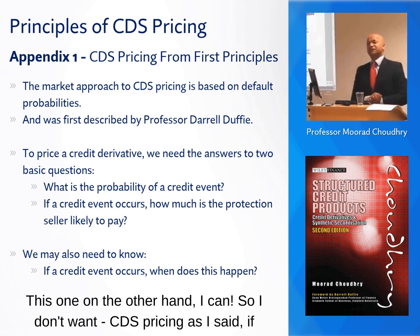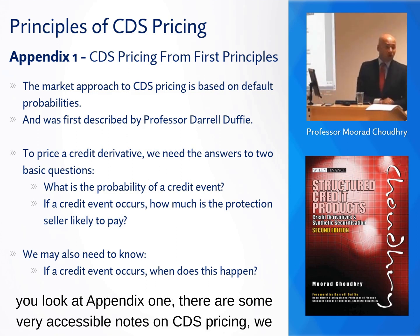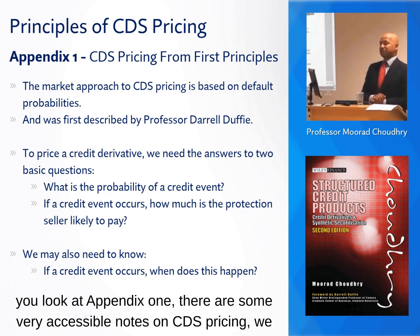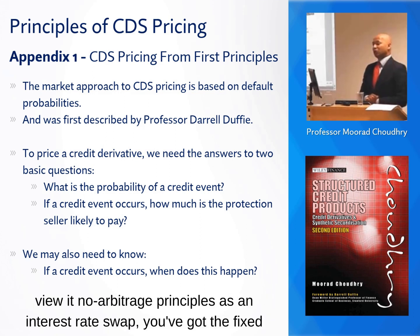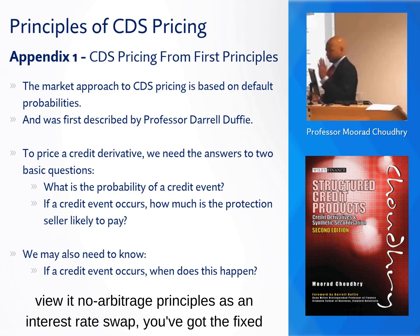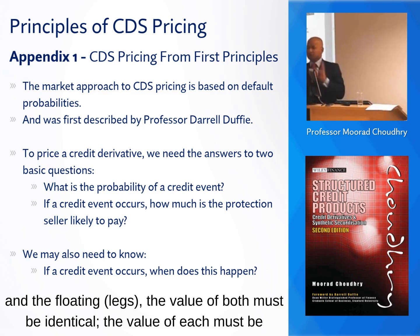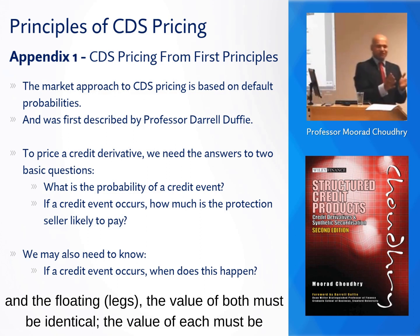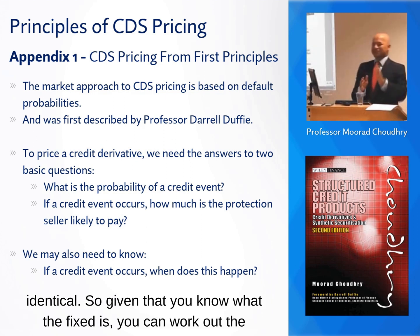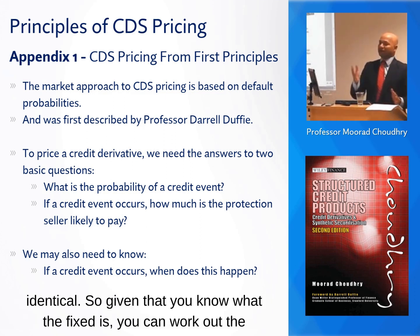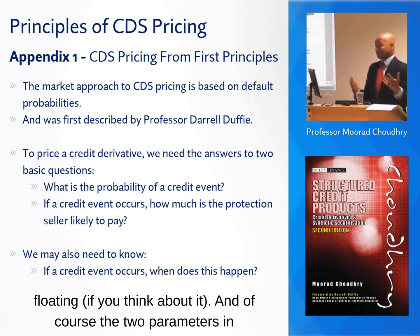I want to cover CDS pricing. As I said, if you look at Appendix 1, there are some very accessible notes on CDS pricing. We view it through no-arbitrage principles — there's an interest rate swap. You've got the fixed and the floating, and the value of both must be identical. Given that you know what the fixed is, you can work out the floating, if you think about it.